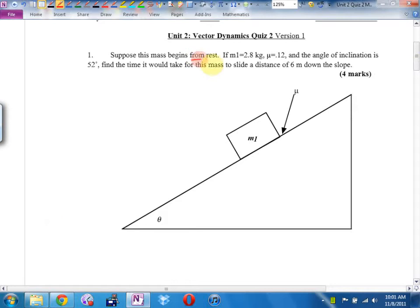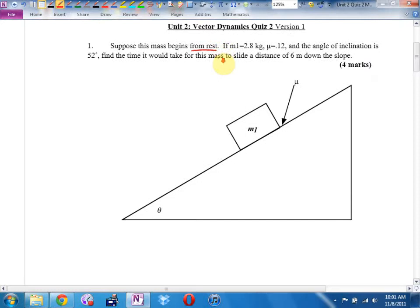Suppose this mass begins from rest. Mass one is 2.8 kilograms. Mu is the coefficient of friction is 0.12. The angle of inclination is 52 degrees. Find the time it would take for this mass to slide a distance of 6 meters down the slope. So what this question is asking me to find is T. I know VI is 0. I know D is 6.